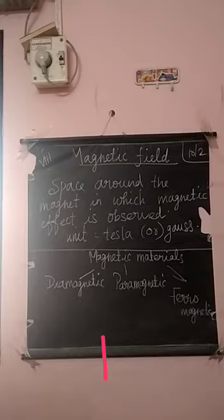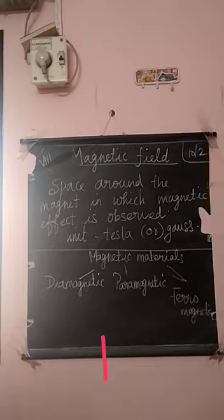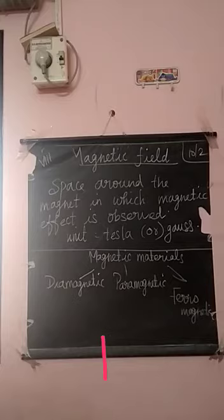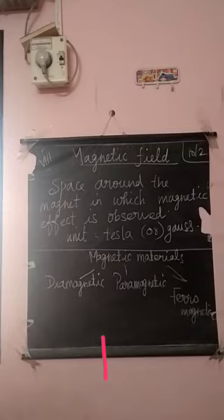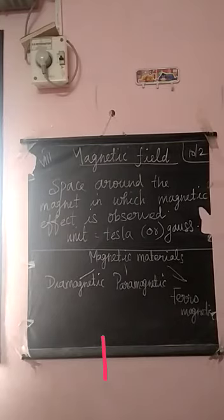What is magnetic field? Magnetic field is nothing but the space around the magnet in which the magnetic effect is observed. If a magnet is placed on a paper, the magnetic effect observed in the space around that magnet is known as magnetic field. Wherever we get that magnetic effect around the magnet is known as magnetic field.